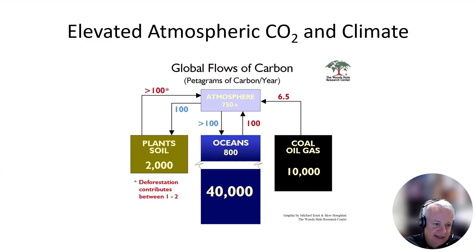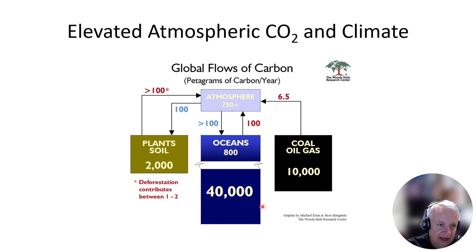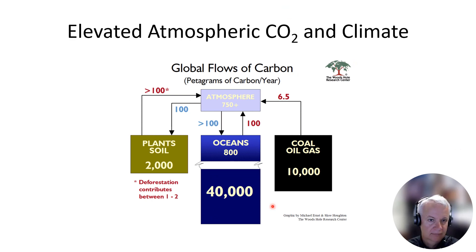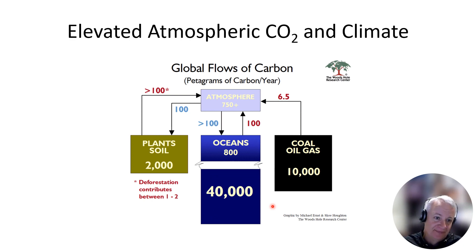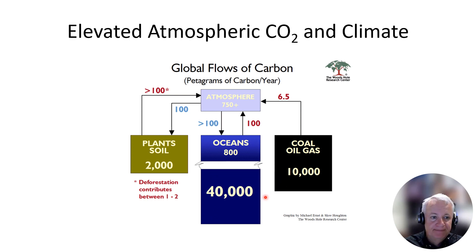This is an overview of the carbon balance of the Earth, and there are two main things shown here. One is the pools of carbon, measured in petagrams of carbon. A petagram is a very large number — one petagram is one billion metric tons. So these pools are in the trillions of metric tons, but this allows you to get relative sizes of pools.